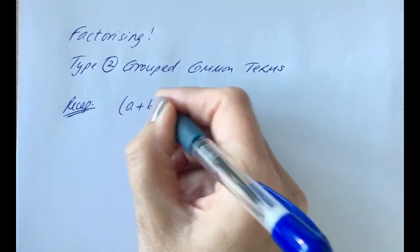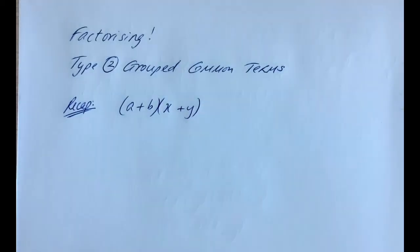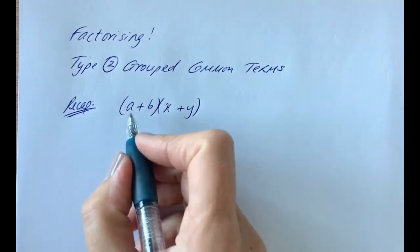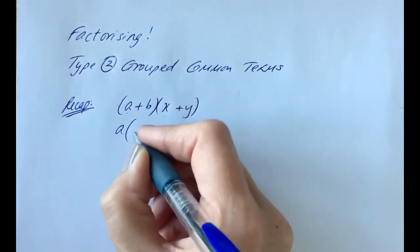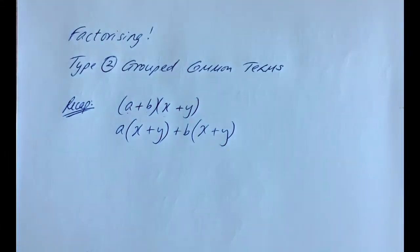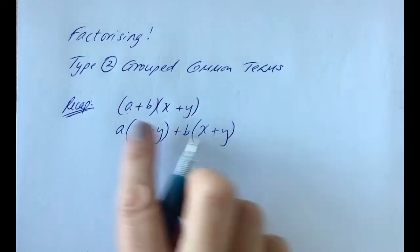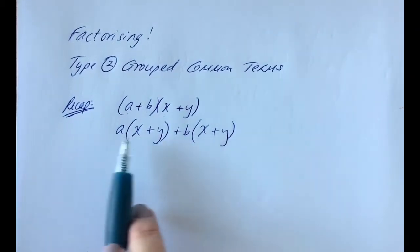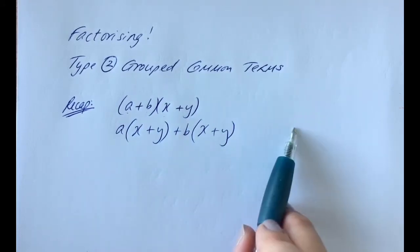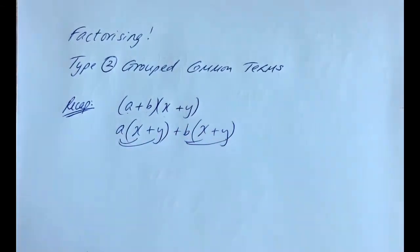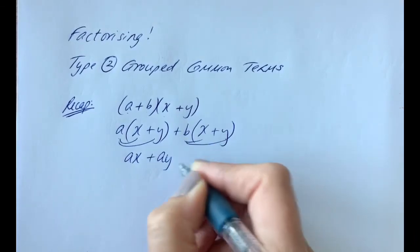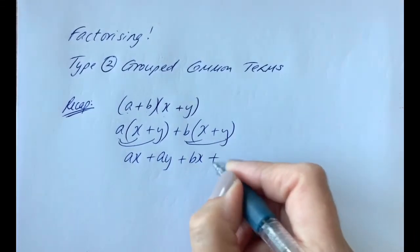Let's say you had two brackets that you were being asked to multiply out. We would take the first term, a, and multiply it by the second bracket, and then take the second term, which is a positive b, and multiply it by the second bracket. You'd still end up with four terms: a times x is ax, a times y is ay, b times x is bx, and b times y is by.